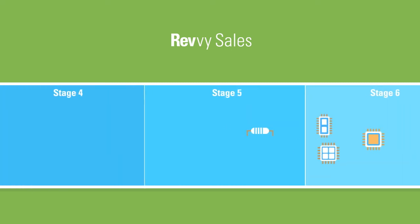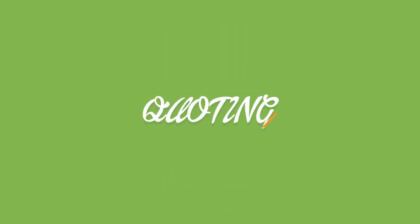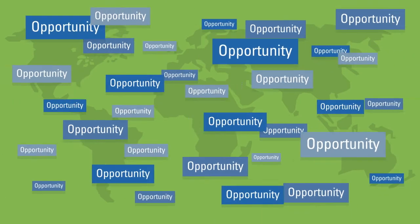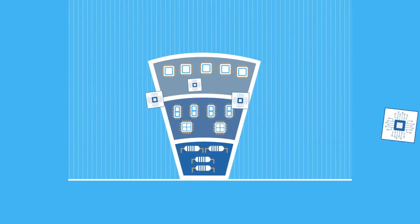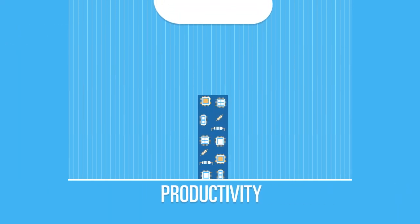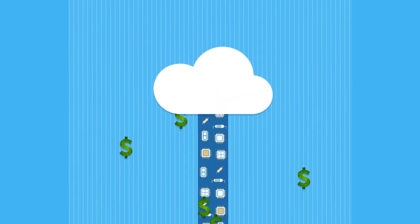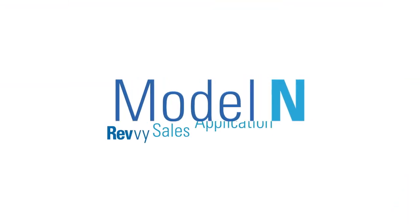Thanks to its unique design, Revy sales allows sales reps to track the different sales stages of each socket within the same opportunity, reducing data entry by more than 50%. Reps can quickly prepare for customer meetings, even creating opportunities directly from their smartphones. The quoting process is simplified, redundancy reduced, and the entire funnel dashboard is visible in one place. Adding more designs into the funnel, reducing data entry, and mobile access all lead to making sales more productive — and increased productivity means maximizing your revenues. Get started with Revy sales today.